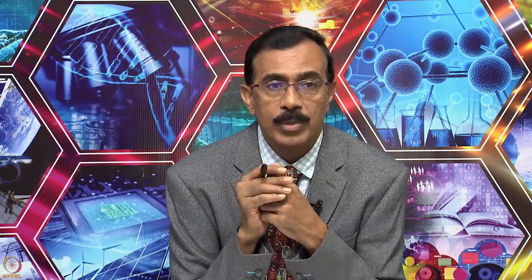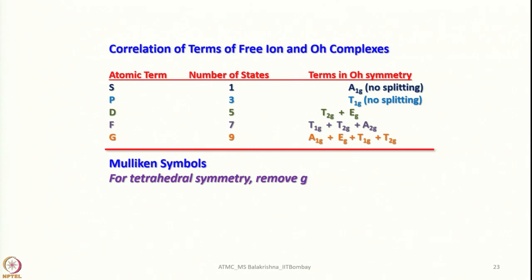Let us make ourselves familiar with atomic term symbols and the number of states. For S (L=0): 1 state, A1G, spherically symmetrical, no splitting. For P (L=1): T1G, no splitting. For D (L=2): splits into T2G and EG — triply and doubly degenerate. For F (L=3): splits into 3 triply degenerate states and one singlet. For G (L=4): gives one non-degenerate, one doubly degenerate, and two triply degenerate representations (3+3+2+1=9 states).